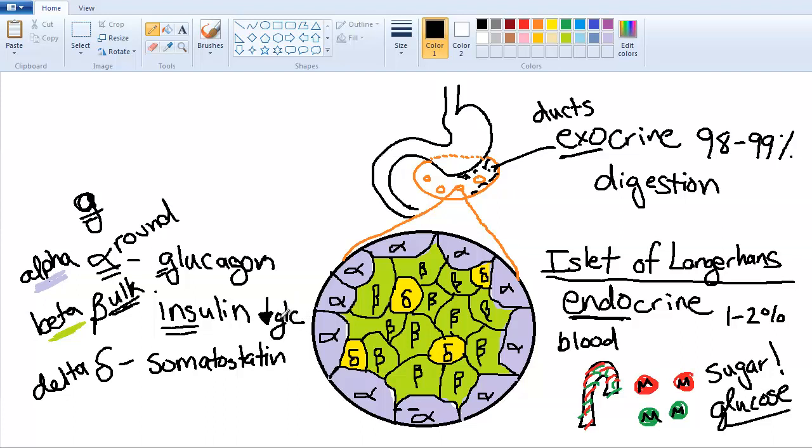Don't confuse glucose, which I wrote down here in the bottom right, with glucagon. Glucagon is the hormone. Glucose is the sugar. O-S-E, meaning it's a sugar. Glucagon is going to act to increase blood glucose levels.